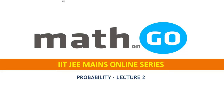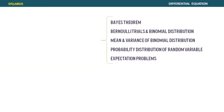Let's start today's topic - Probability Lecture 2. We covered the total probability theorem in Lecture 1, and now we'll continue to Bayes theorem. The topics we're going to cover in this lecture are Bayes theorem, Bernoulli trials, and binomial distribution. We'll also cover mean and variance of binomial distribution, and probability distribution of random variables.